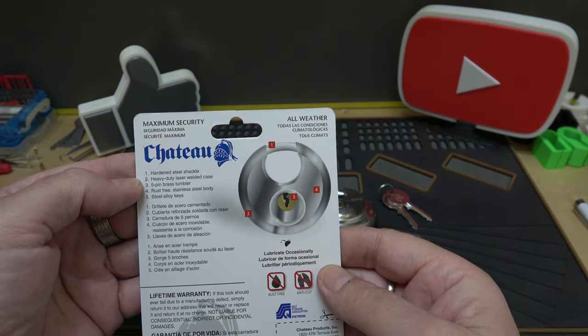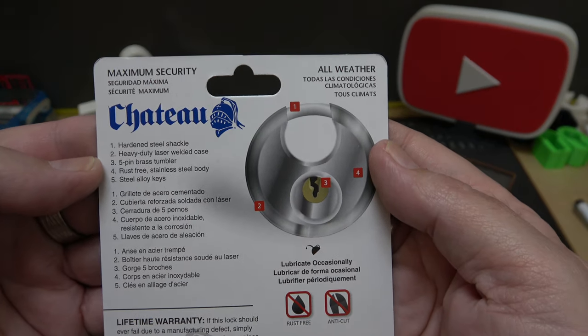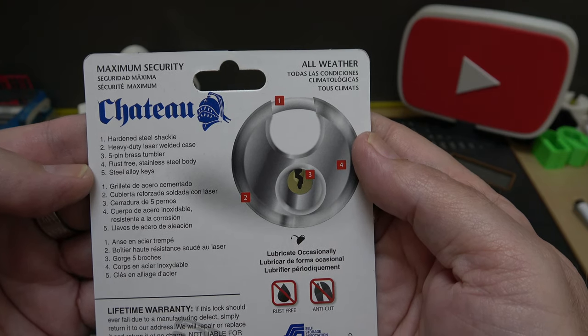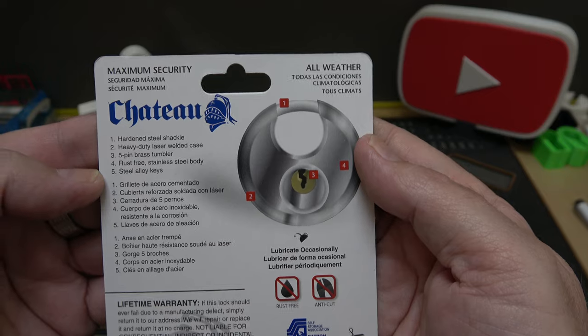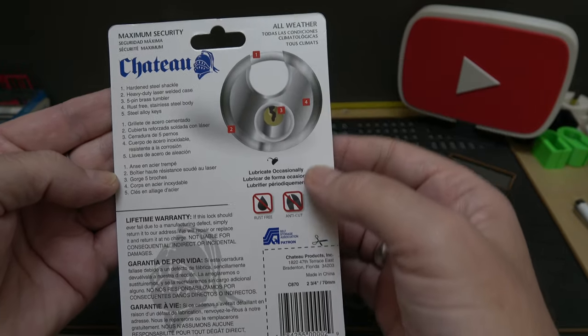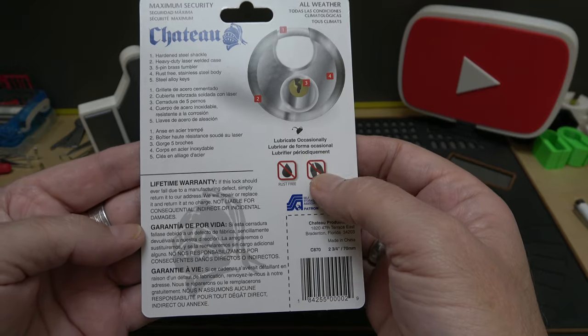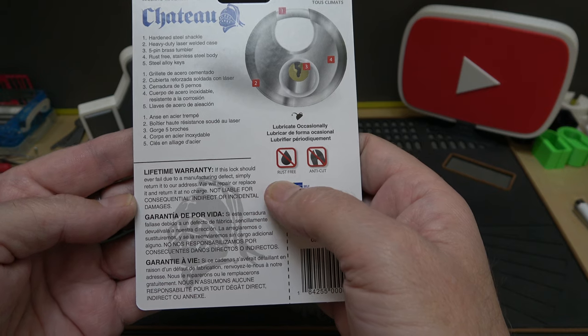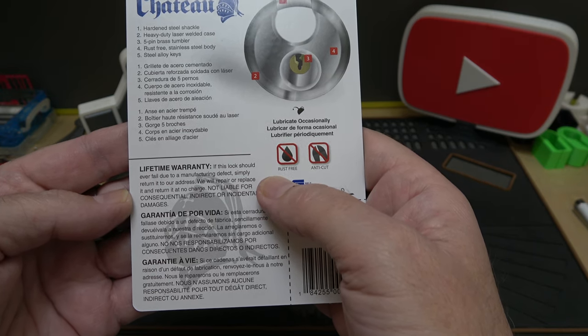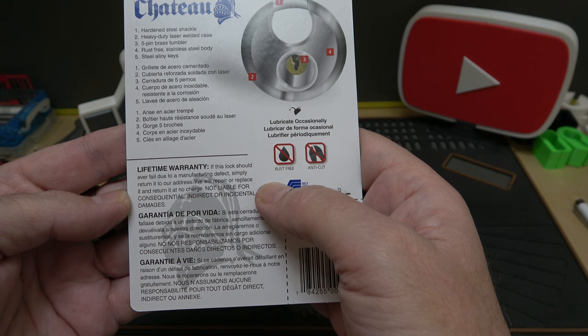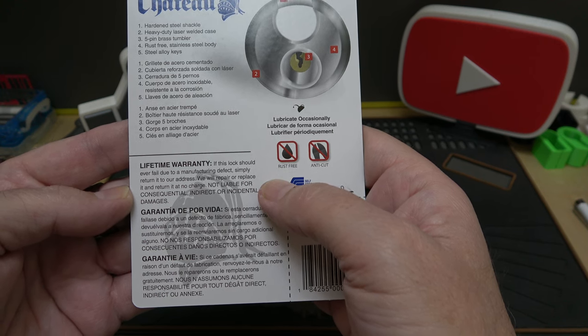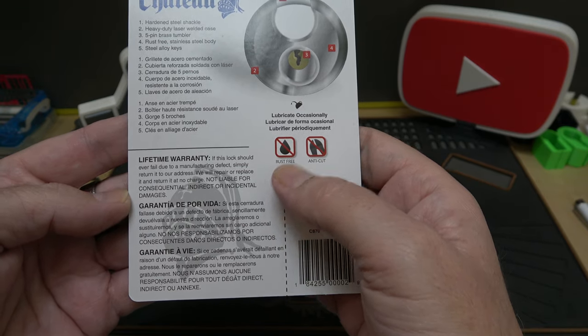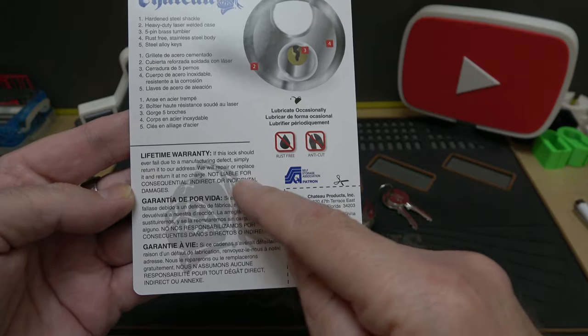What we got here: maximum security hardened steel shackle, heavy-duty laser welded case, five-pin brass tumbler, rust-free stainless steel body, steel alloy keys. All weather, lubricate occasionally. Lifetime warranty - if this lock should ever fail due to a manufacturing defect, simply return it and we will repair or replace it at no charge. Not liable for consequential, indirect, or incidental damages - I guess that's the catch to the lifetime warranty.